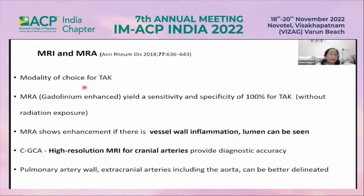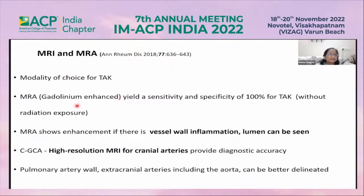This CT angiography image shows the subclavian artery at its origin with a narrowed lumen. MRI and MR angiography is the modality of choice in Takayasu arteritis, yielding sensitivity and specificity of 100% without any radiation exposure.